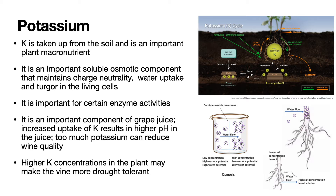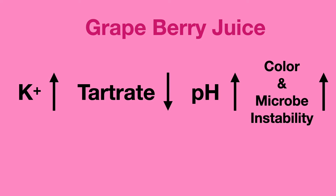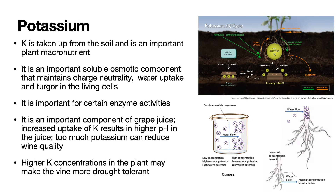Potassium is also important for certain enzyme activities, and it is an important component of grape juice. Increases in uptake of potassium can result in precipitation of tartaric acid and a higher pH in the juice, and too much potassium can reduce the wine quality. With too high of a pH, you can get contamination of bacteria in your wine and thus create a reduced wine quality. Higher concentrations of potassium in the plant, on the other hand, may make the vine more drought tolerant, since it's able to absorb water more readily from soils that have even lower amounts of water and also keep that water in the plant.